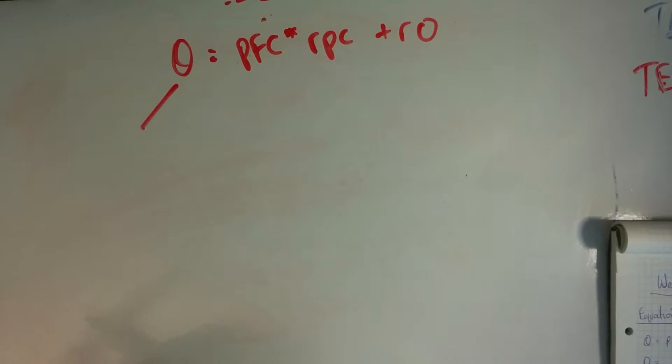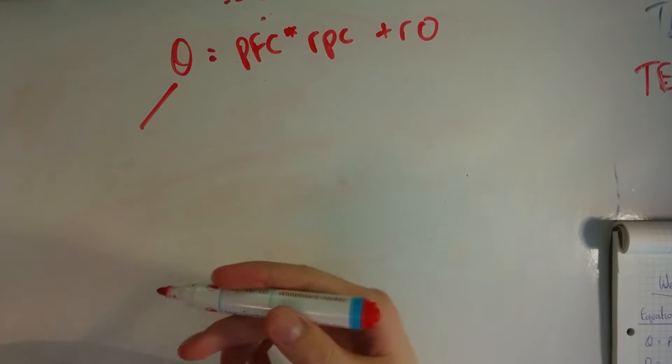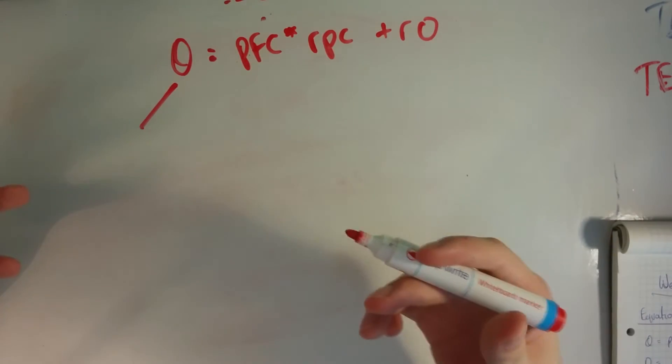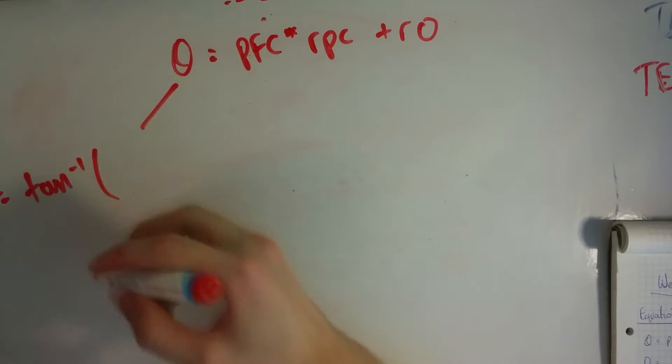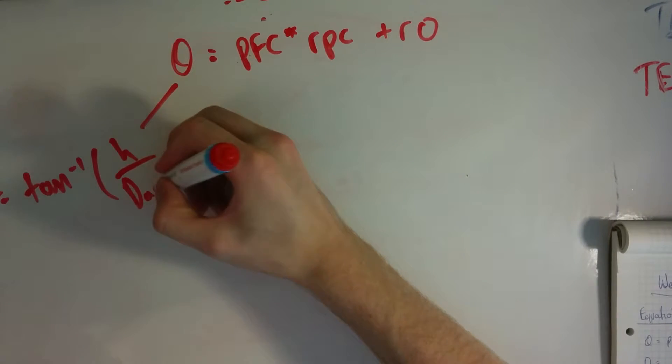From the equations I showed at the start of the video, theta can be broken down, thanks to the equation, to just measurable values that we can do doing real world experiments. So theta is equal to inverse tan of h over d actual, because it's the one we actually measured.